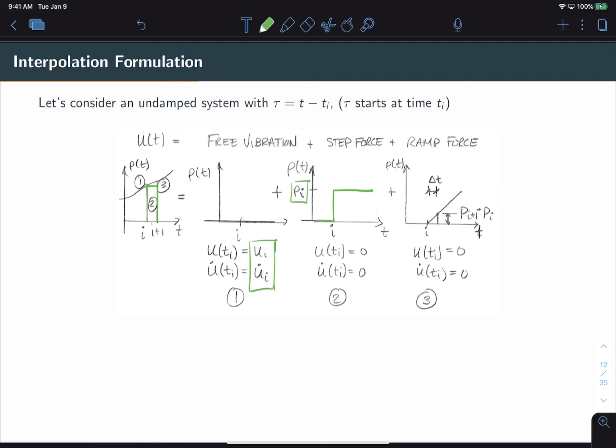And then lastly we add a ramp to account for the linear change in force from i to i+1, and that is this function number three which is a ramp starting at zero at i and going to a value of pi+1 minus pi, essentially the change in p. Again we are using zero initial conditions for this case.